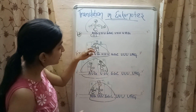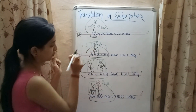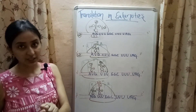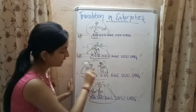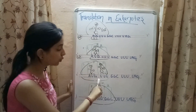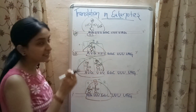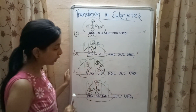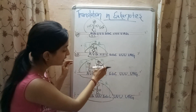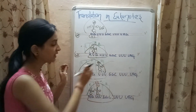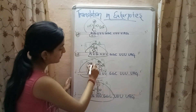A tRNA molecule carrying an amino acid enters the ribosome through the A site. If the anticodon of the tRNA matches the codon on the mRNA, the tRNA is accepted into the ribosomal unit; otherwise it is rejected. For example, a tRNA containing the anticodon AAA matches against the mRNA codon UUU and is accepted. After attachment of this charged tRNA, a peptide bond is formed between the two amino acids on the different tRNA molecules.